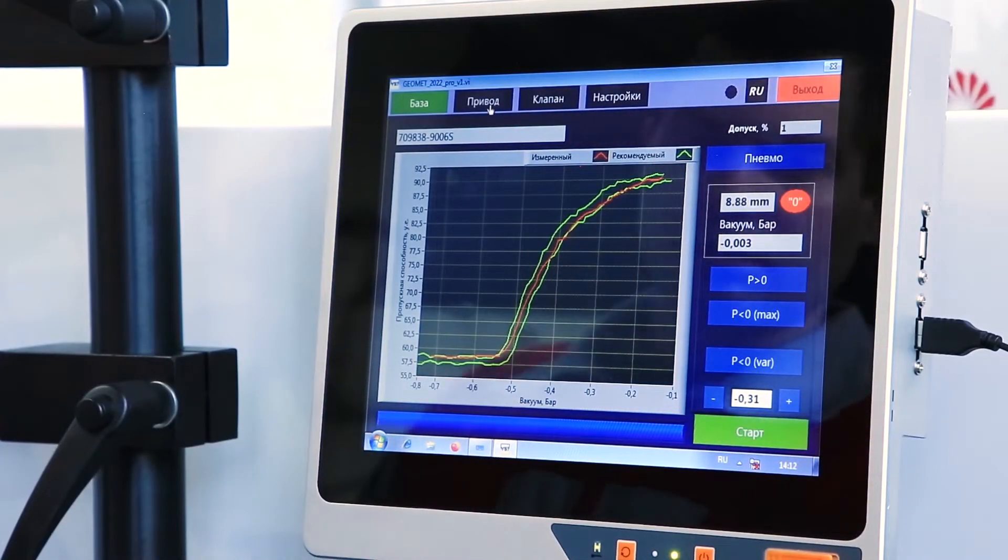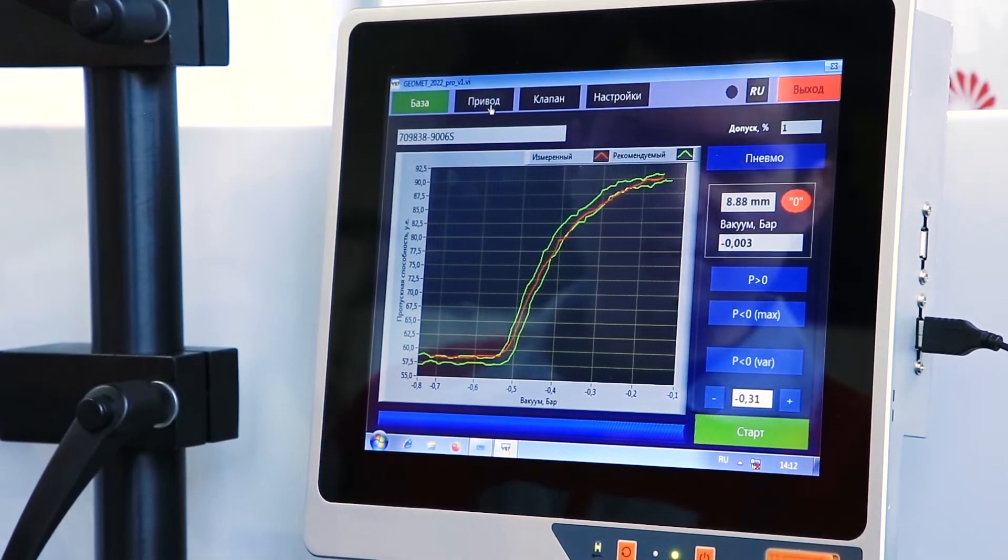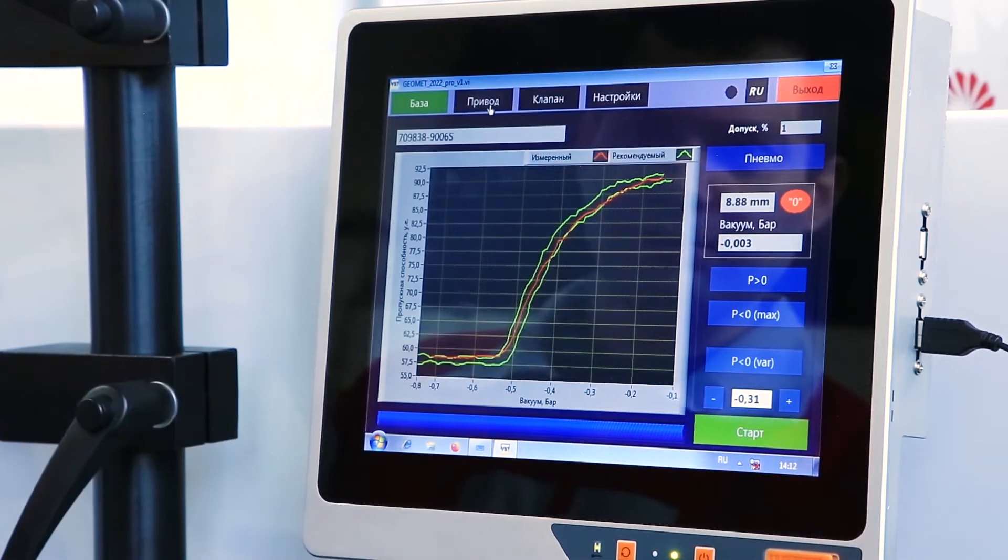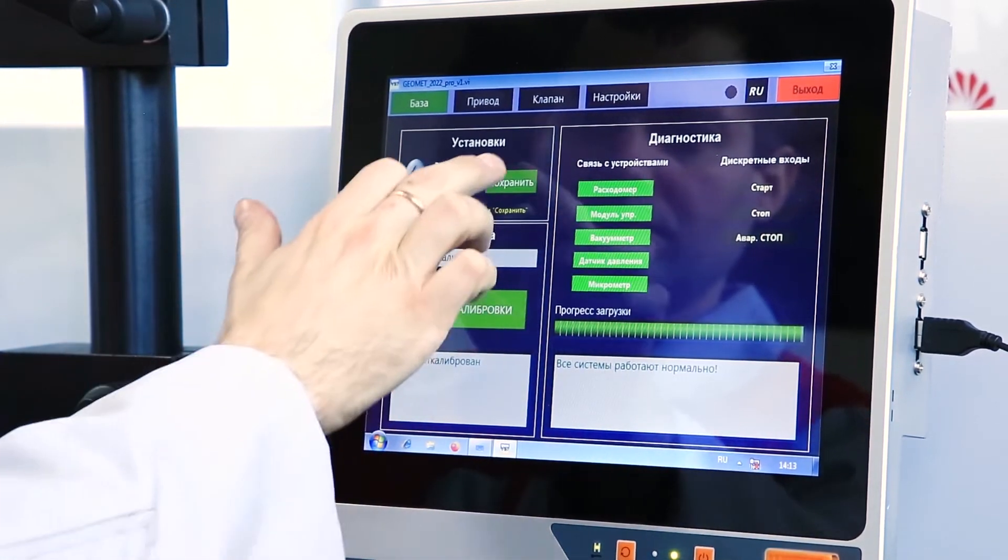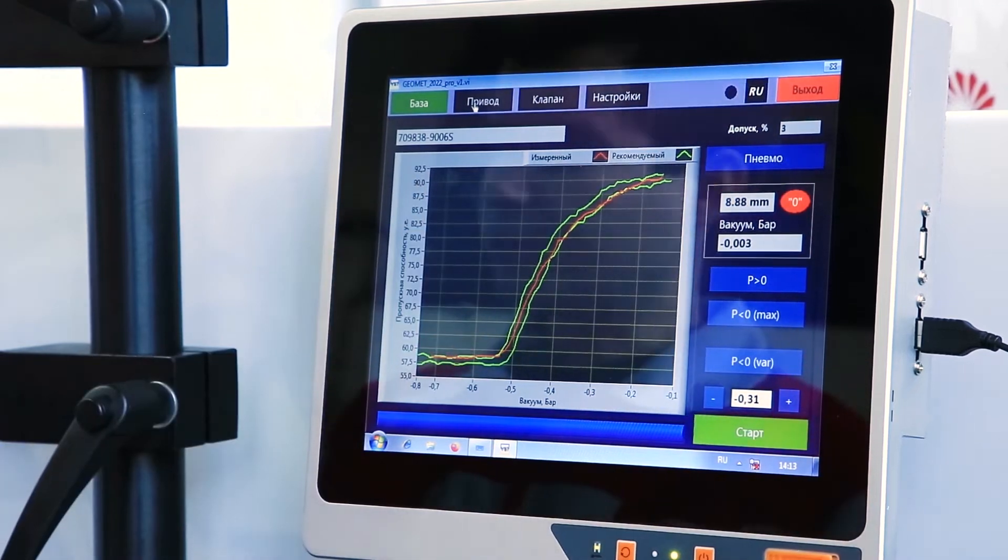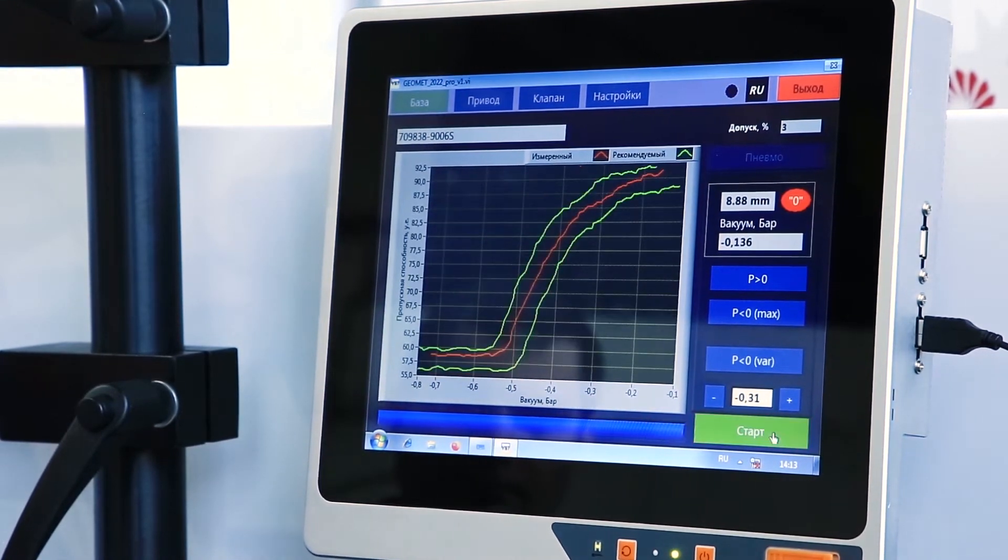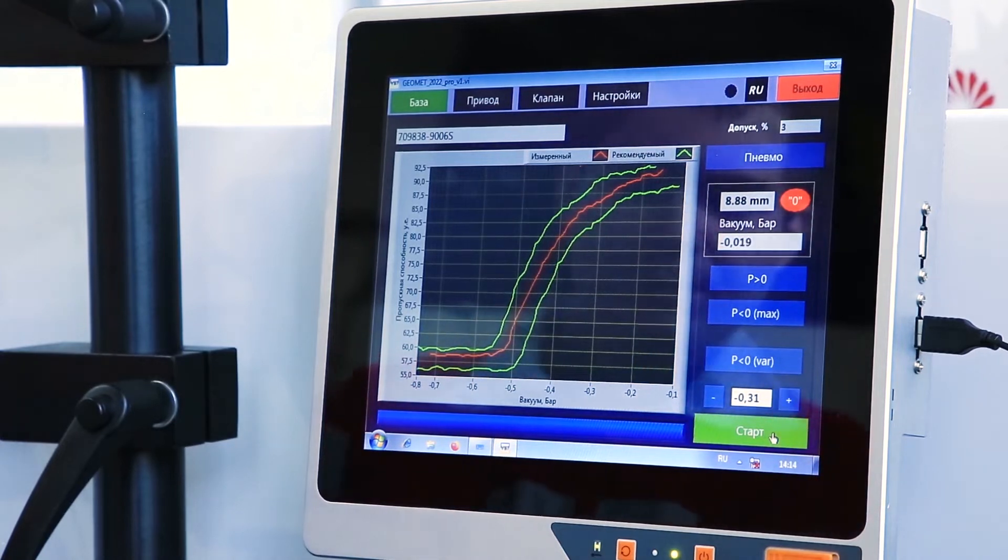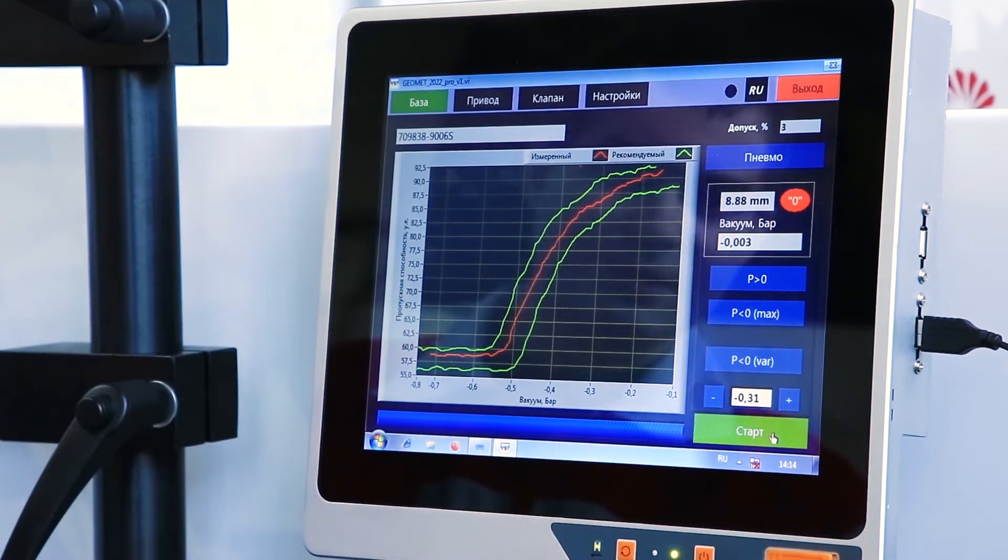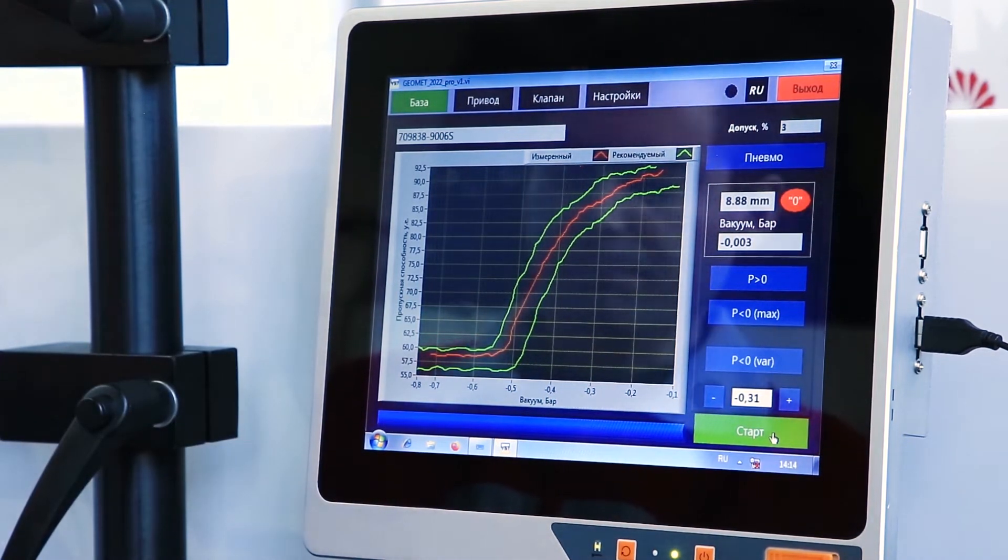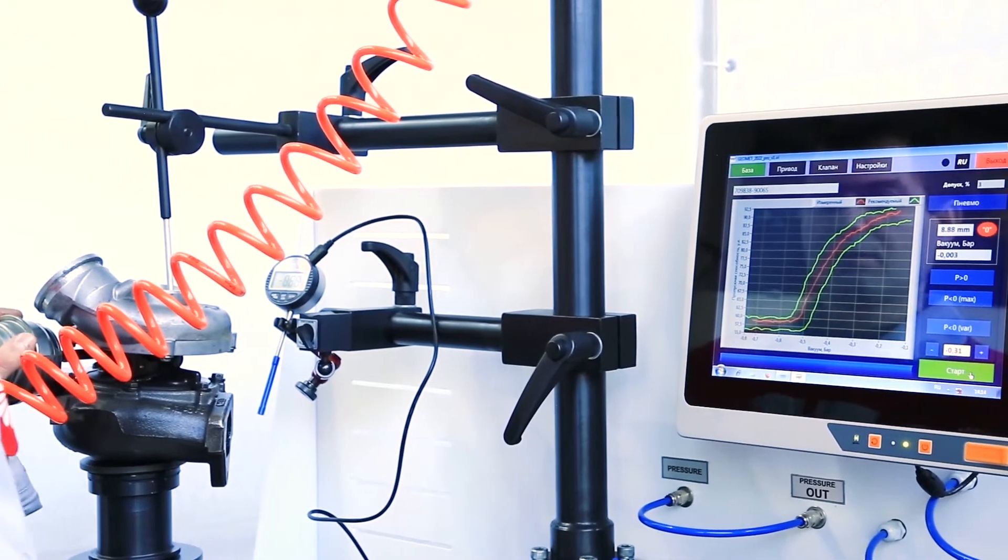Our setup was at a tolerance of one percent. Usually, this percentage is used to adjust the machine, but in order to show the accuracy of the machine, we adjusted it to one percent. For work, an acceptable percentage is three. Now we will restart and see how accurately we have calibrated. In practice, a tolerance of three percent is applied. Here we can see a tolerance of three percent. In this case, the calibration of the turbocharger with a vacuum actuator is over. Our turbocharger is fully calibrated in the required tolerance field.